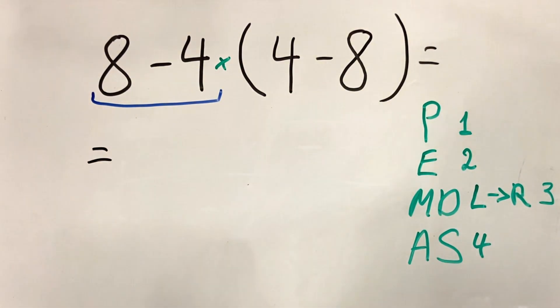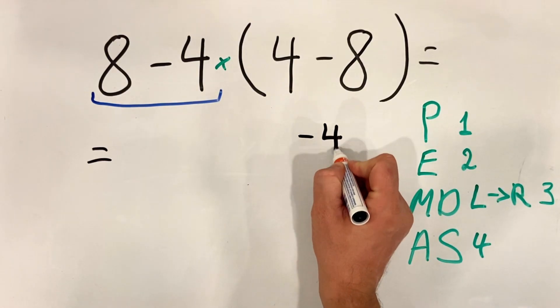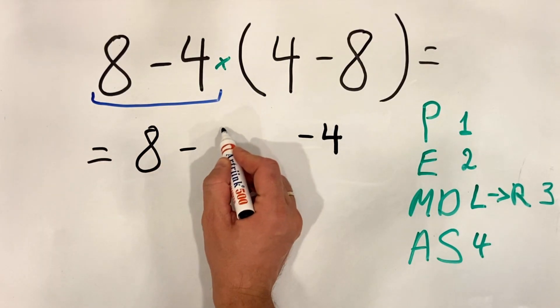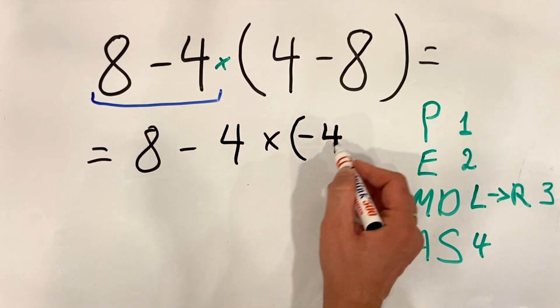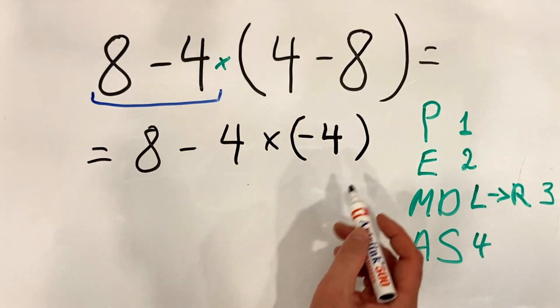So here, what we have is four minus eight equals minus four, and we can write it here: minus four. We'll put the parentheses here to not forget the sign.